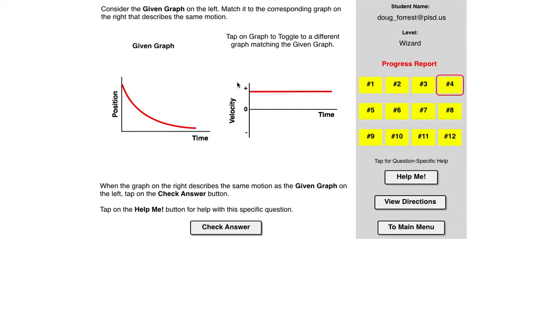And essentially what we're going to do here, the given graph is on the left. In either of these two levels, it could be either position-time or velocity-time. That's fantastic. And then you have to click through here and choose which of these represent the matching one to this graph.